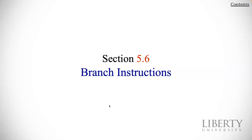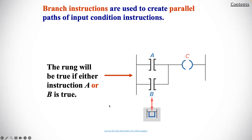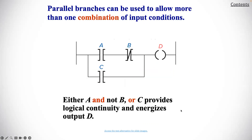Let's get into branch instructions. Branch instructions are used to create parallel passive input condition instructions. A rung will be true if either instruction A or B is true. Parallel branches can be used to allow more than one combination of input conditions — either A and not B, or C provides logical continuity and energizes output D.